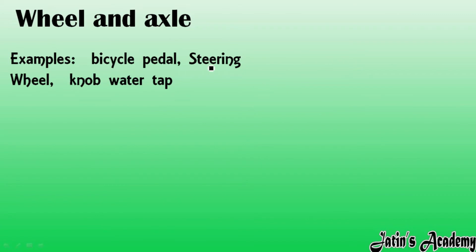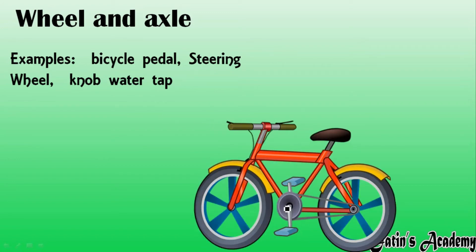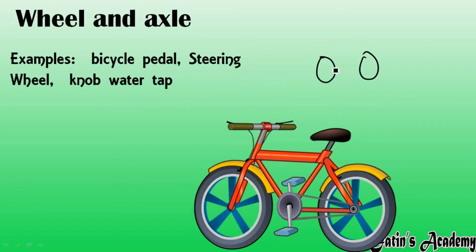The first example related to wheel and axle is the bicycle pedal. In a bicycle pedal, there are two circular wheels. In between the two circular wheels this axle is there, so whenever we are rotating one paddle the second paddle is also rotating with the help of this axle.